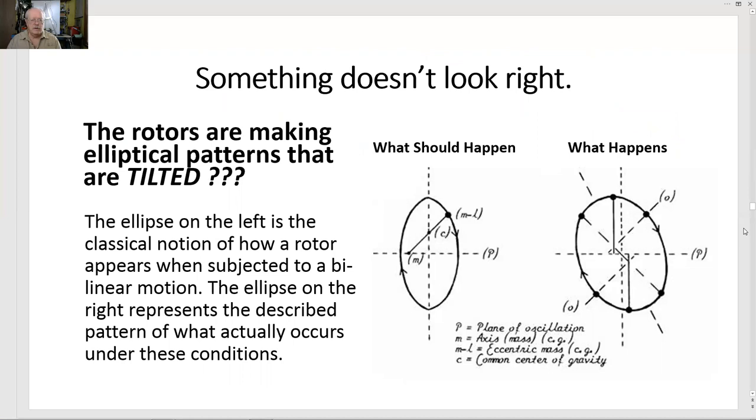Something doesn't look right. The rotors are making elliptical patterns that are tilted. The ellipse on the left is the classical notion of how a rotor appears when subjected to a bilinear motion. The ellipse on the right represents the described pattern of what actually occurs under these conditions. Okay, plane of oscillation is left to right, right to left.